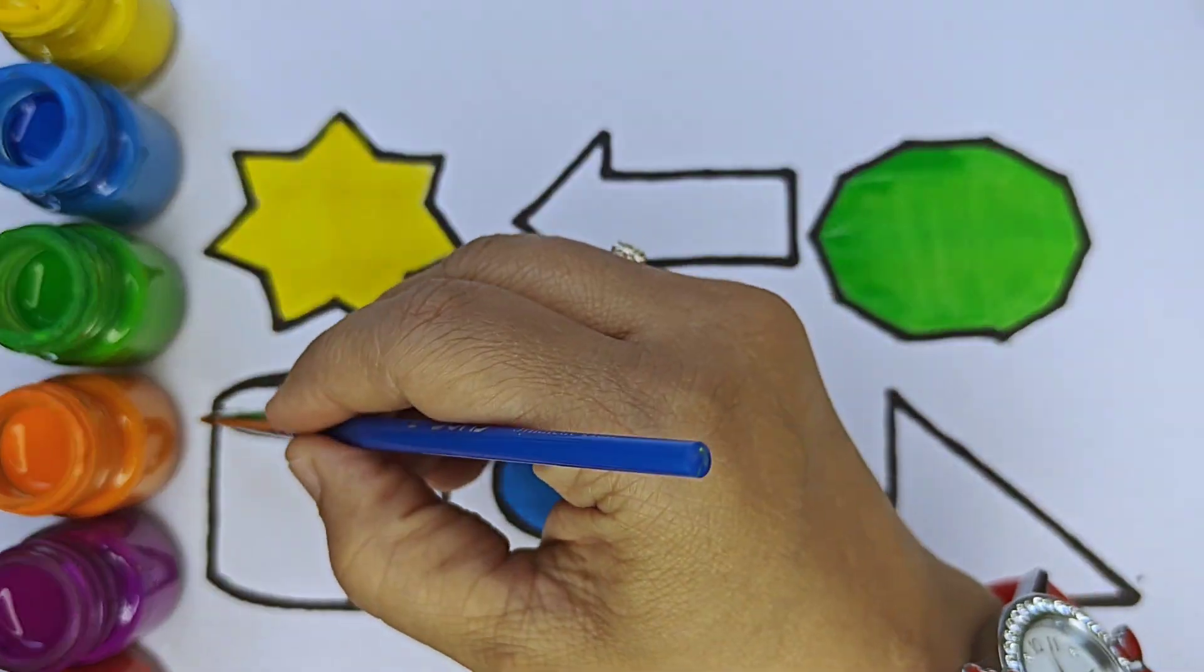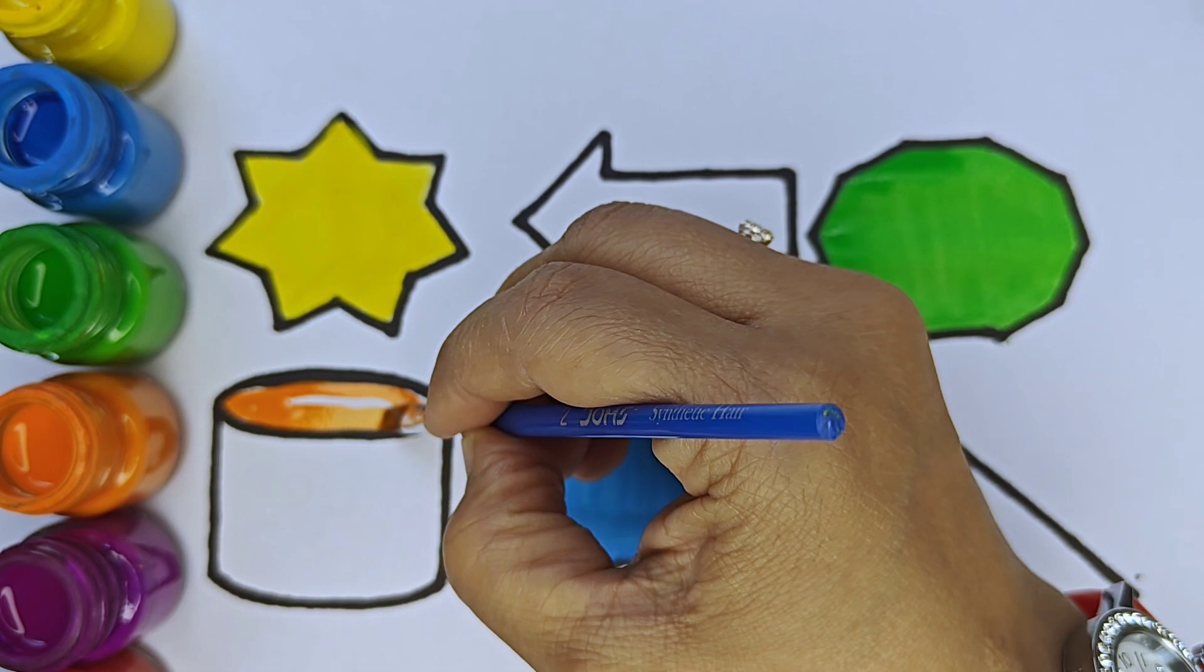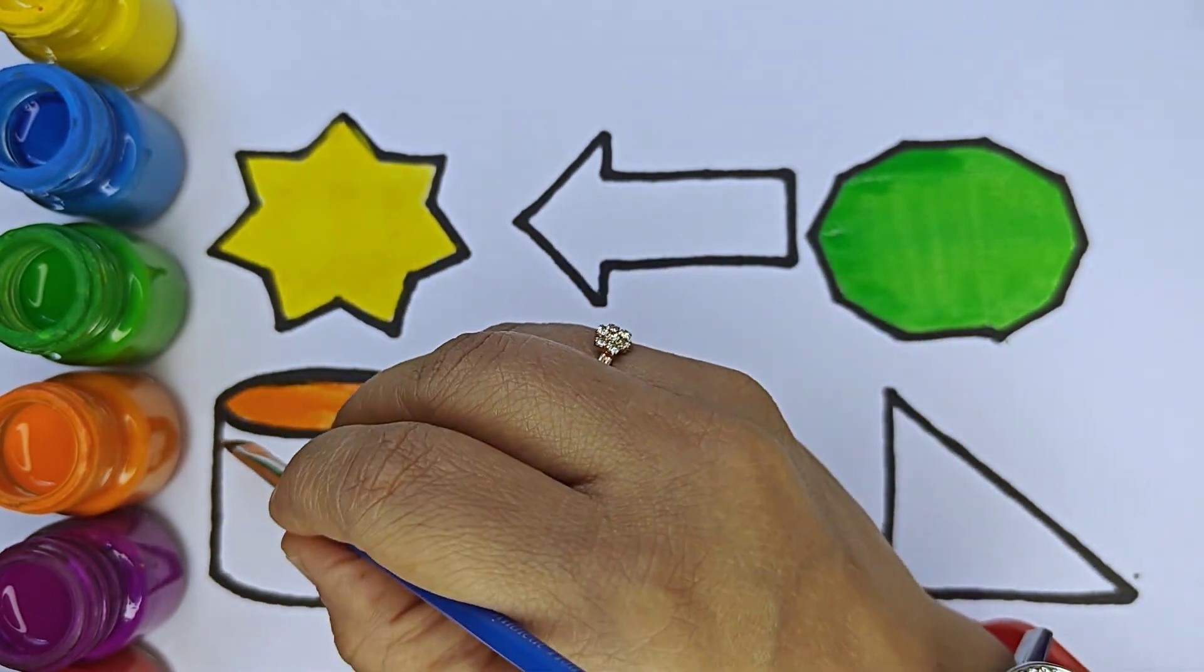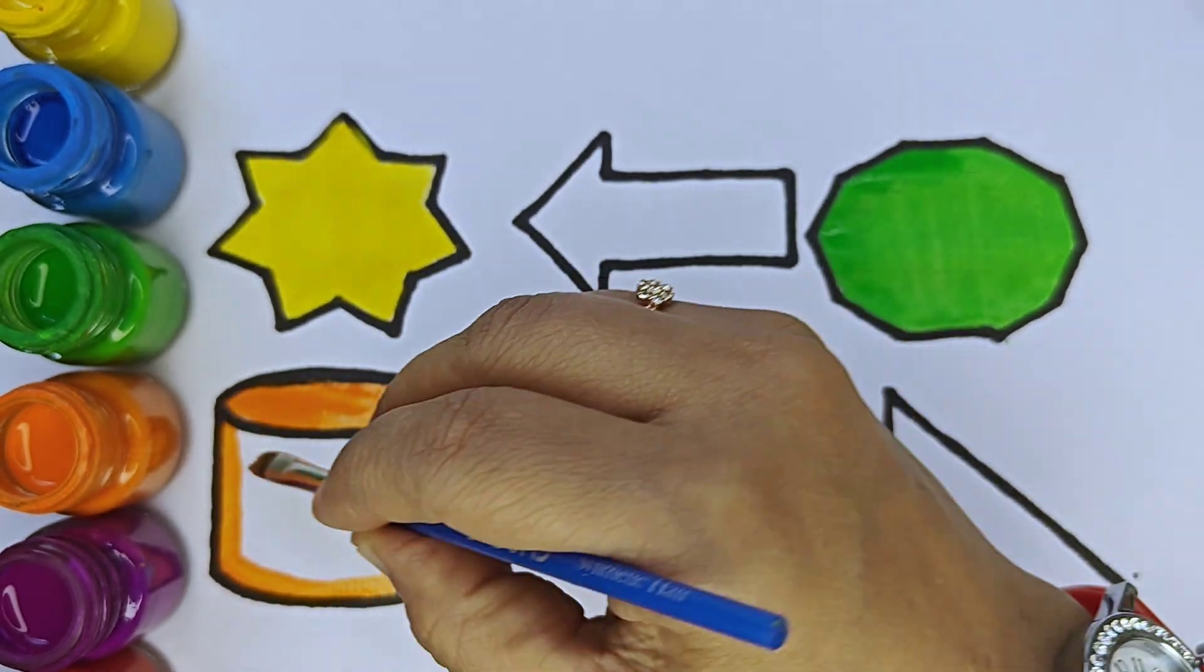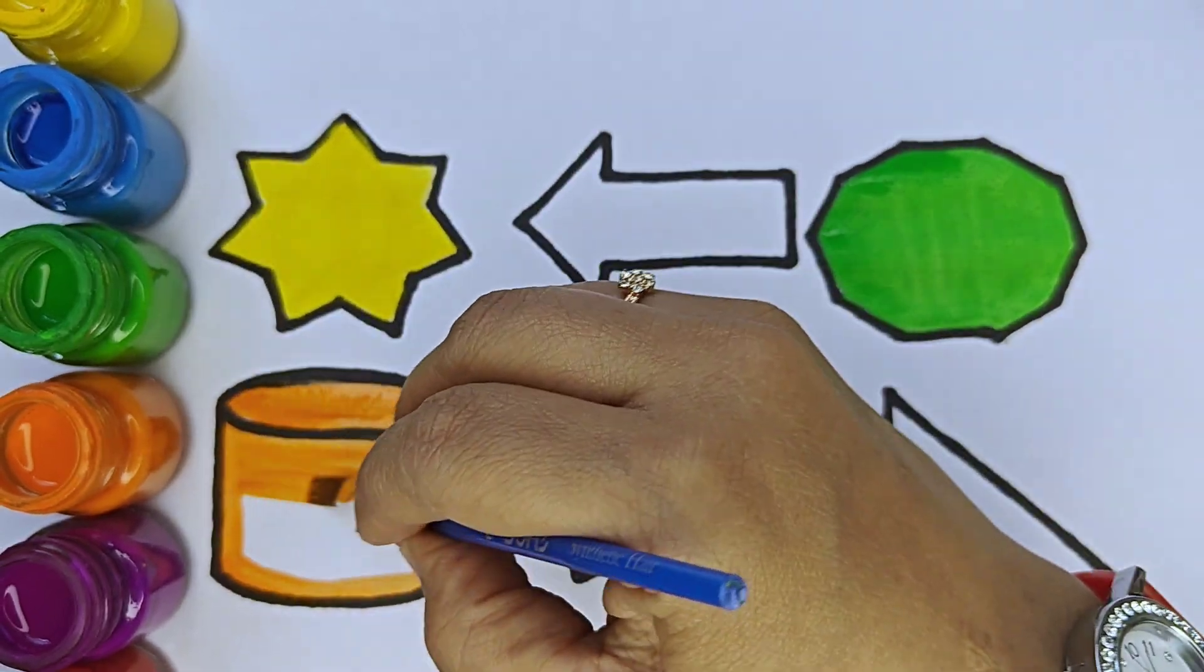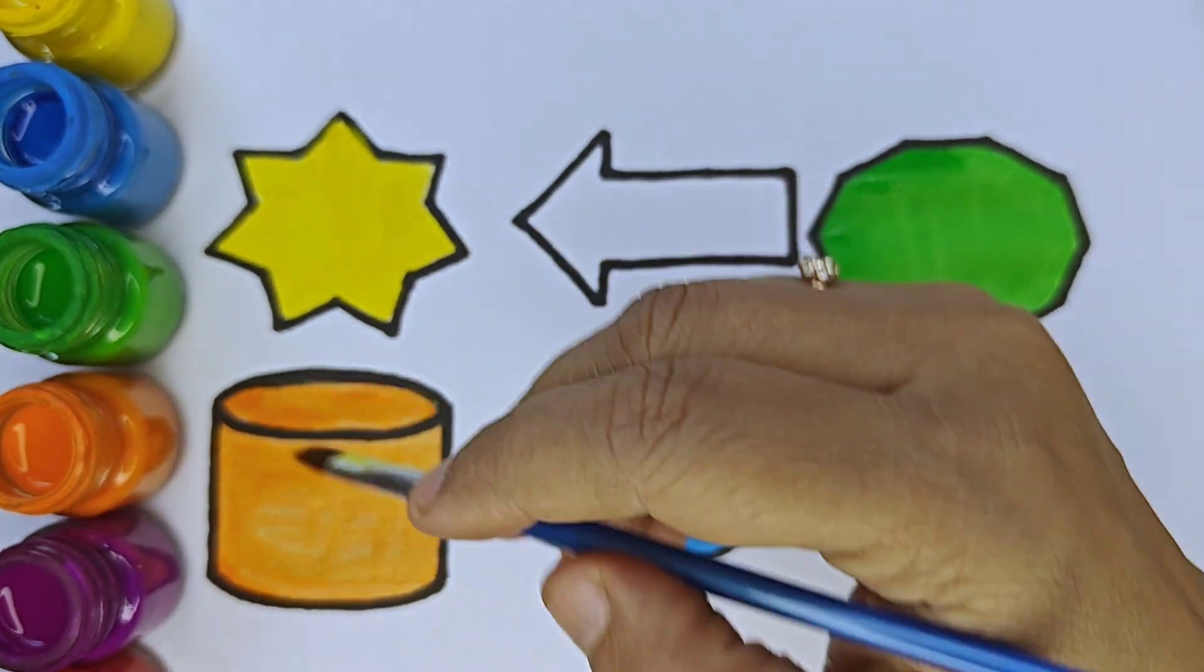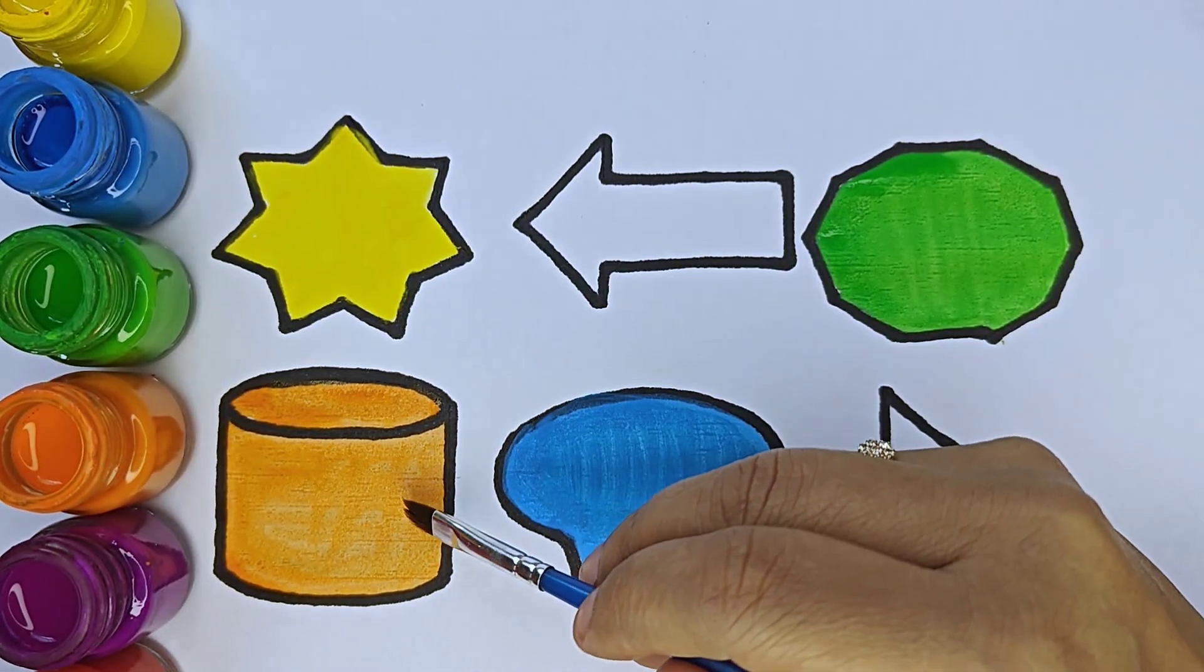Orange color. This shape is cylinder, it is a 3D shape.